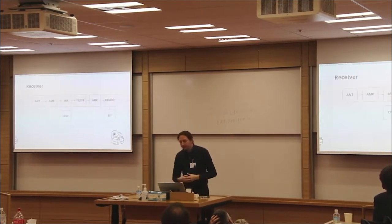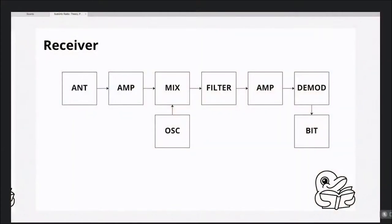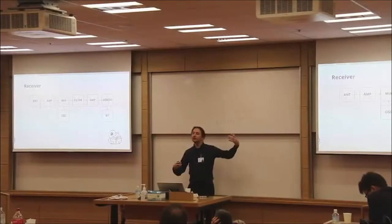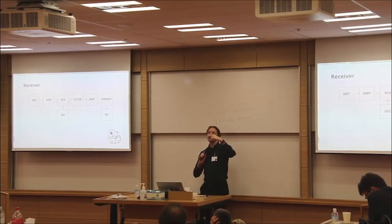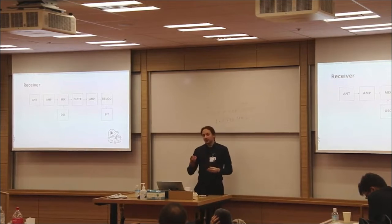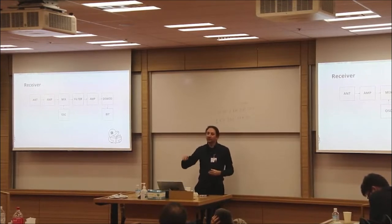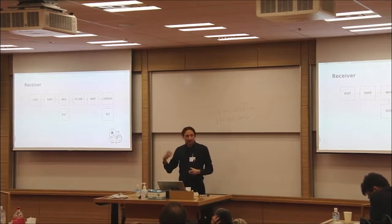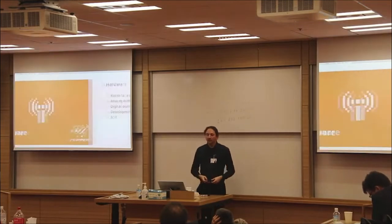The receiver is a little bit more complex. When talking about modern ones, we're mostly talking about those that use a superhet (superheterodyne) structure. You have your antenna, your signal, an amplifier. Then your amplified signal goes into a mixer. The tuned frequency you want also goes into the mixer, which allows you to get an intermediate frequency. Then you filter what you don't need, amplify it, and do demodulation. Then you get a bit stream that you can decode on your microcontroller.